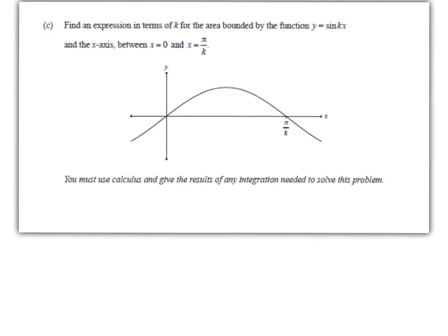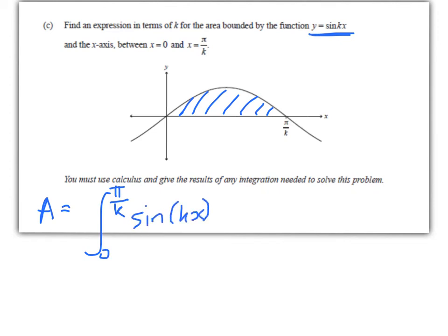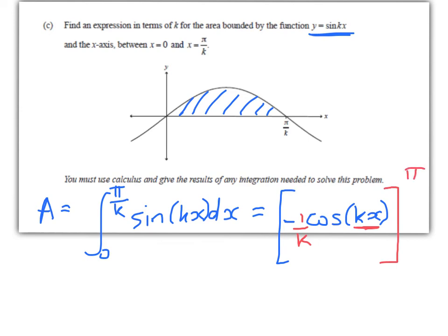Find an expression in terms of k for the area bounded by the function y equals sine kx, the x-axis, between x equals 0 and x equals pi on k — in other words, find the shaded area. You must use calculus and give the results of any integration needed. So the area is going to be the integral from 0 to pi on k of sine kx dx. Anti-differentiating, we're going to have something times cos of kx. Since cos differentiates to give us negative k sine kx, we need to multiply through by a factor of 1 over k.